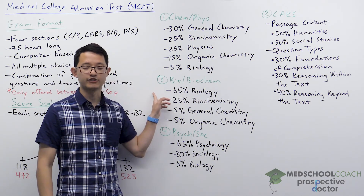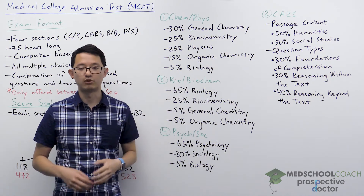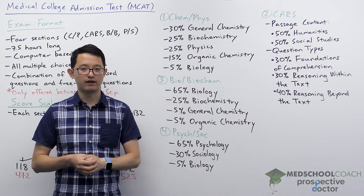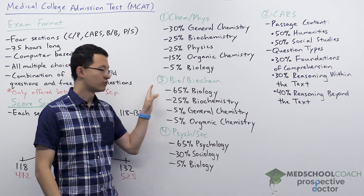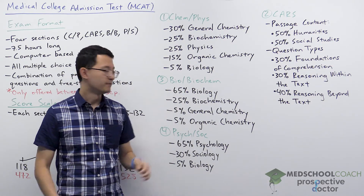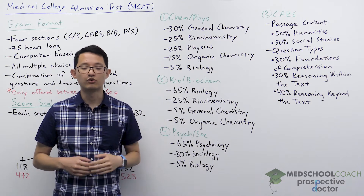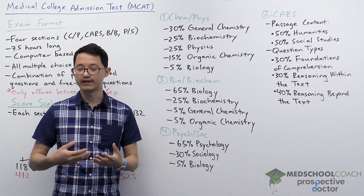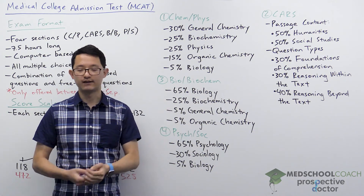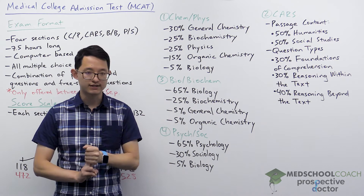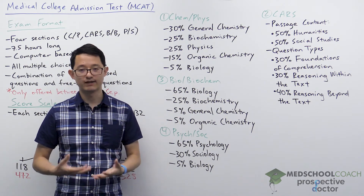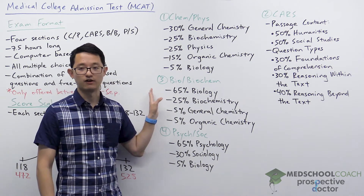In college, you'll need to take general biology as a prerequisite for medical school and the MCAT. Unfortunately, general biology usually doesn't cover these topics in the depth you'll see on the exam. So if you're able to take additional upper-division biology courses — such as physiology, genetics, cell biology, or microbiology — that's definitely going to give you an advantage on this section.